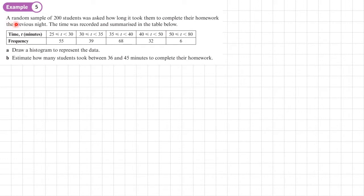Example 5. A random sample of 200 students was asked how long it took them to complete their homework the previous night. The time was recorded and summarized in this table below. In part A we need to draw a histogram to represent the data. So the first thing we need to do is to work out the frequency density for each bar, effectively the height of each bar.